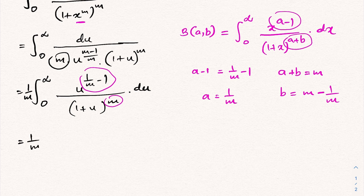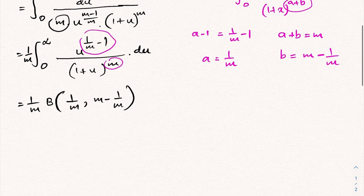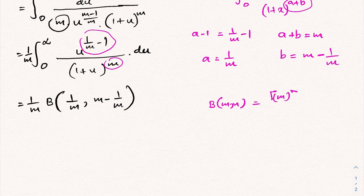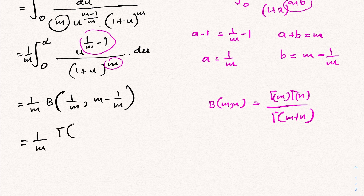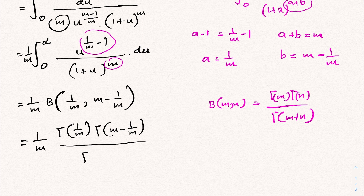Therefore our integral equals (1/m) · β(1/m, m − 1/m). Using the relation β(m, n) = Γ(m)·Γ(n) / Γ(m+n), we write this as (1/m) · Γ(1/m) · Γ(m − 1/m) / Γ(m), since 1/m + (m − 1/m) = m.